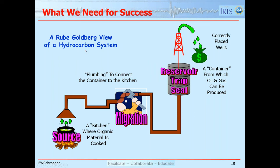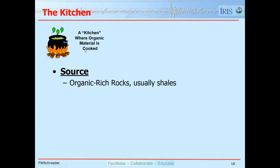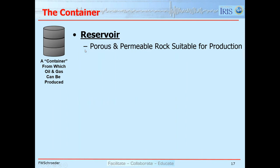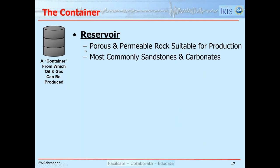This diagram and our discussion today is for conventional reservoirs, not for unconventional or resource plays. For the kitchen, we need a source rock: organic-rich material, usually organic-rich shales. Those rocks have to have the right temperature, pressure, and burial conditions to start a geochemical process of converting the raw organic material into oil and gas. For the container, we need a reservoir — a rock that is porous and permeable so we can produce fluids out of it. The most common reservoirs are sandstones or coarser clastics and certain types of carbonates with good porosity and permeability.